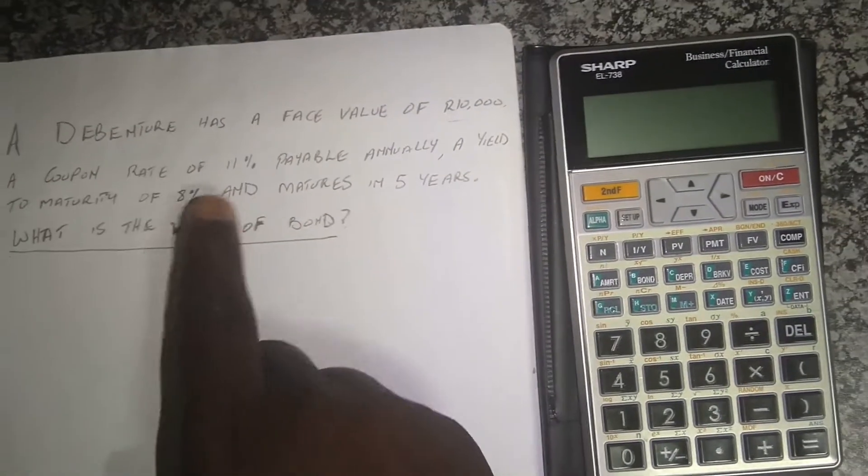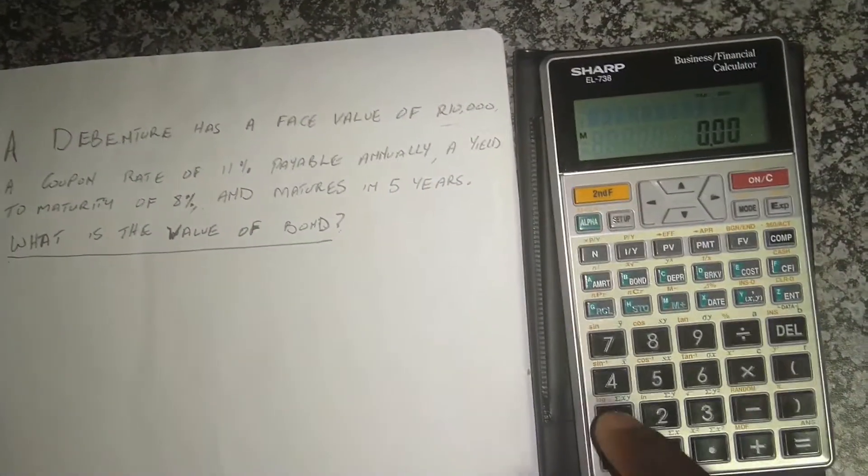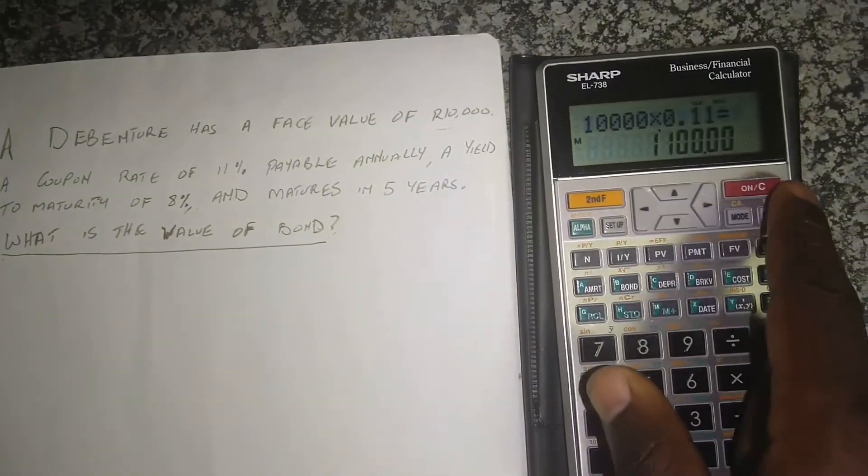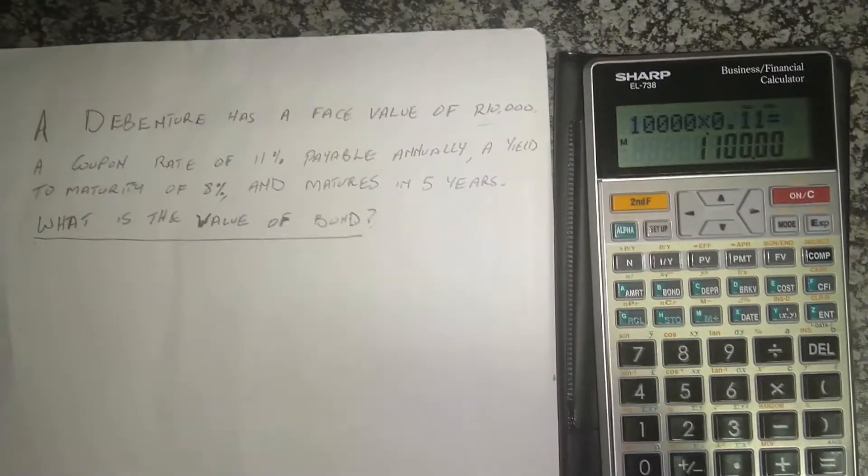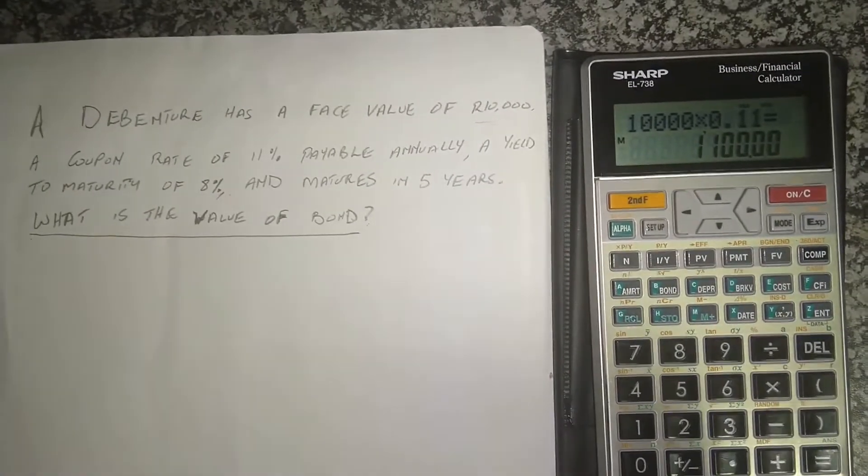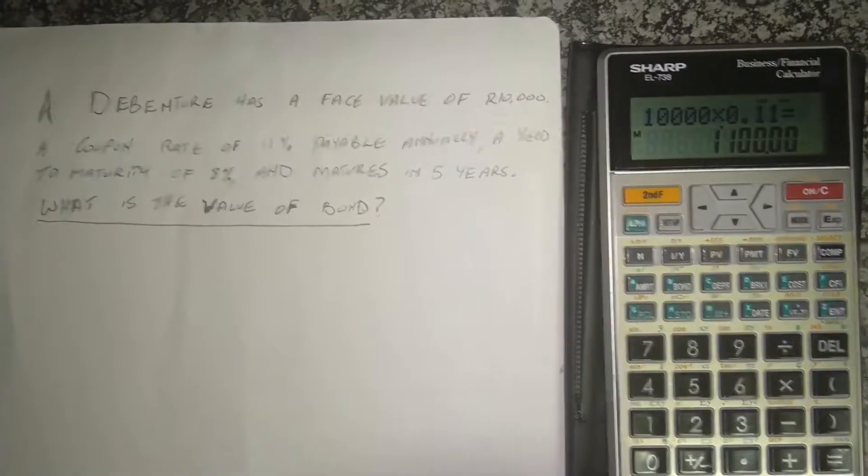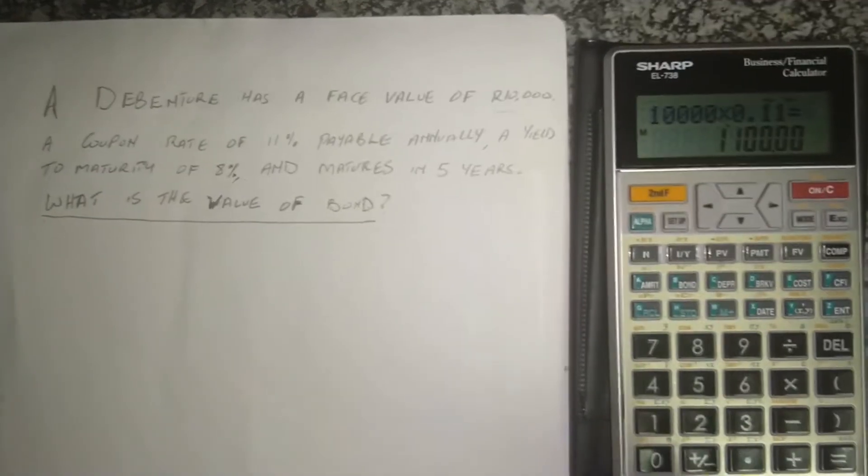So let's calculate 11% of 10,000 rand. That will be 10,000 times 11, which gives us 1,100 rand. That will be the interest rate that we'll be paying every year until the debenture matures, and that is in five years time. So 1,100 will be paid every year until year five.